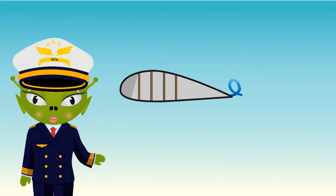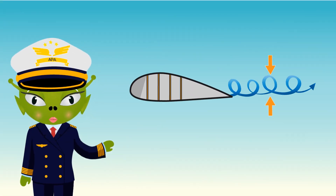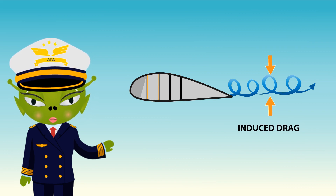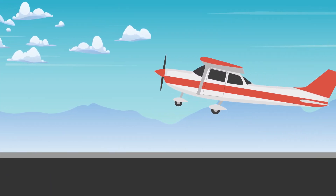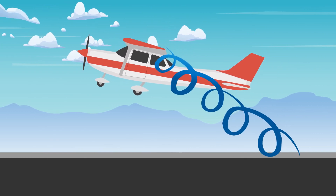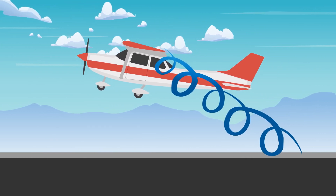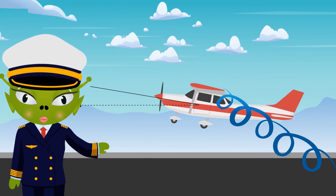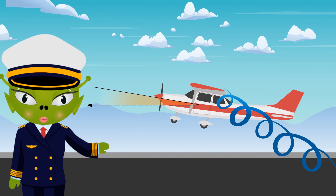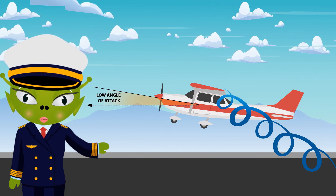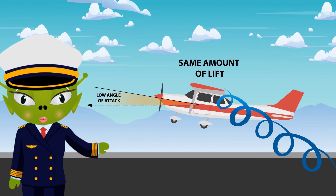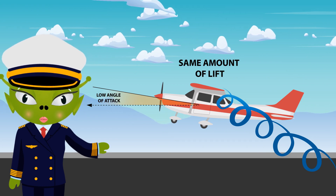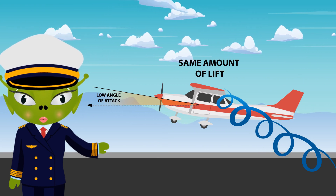This has nothing to do with a cushion of air beneath the aircraft, but a reduction of induced drag. This induced drag, which is created by the wingtip vortices — a byproduct of lift — allows the aircraft to fly at a lower angle of attack and still create the same amount of lift when this drag is reduced due to being close to the surface.